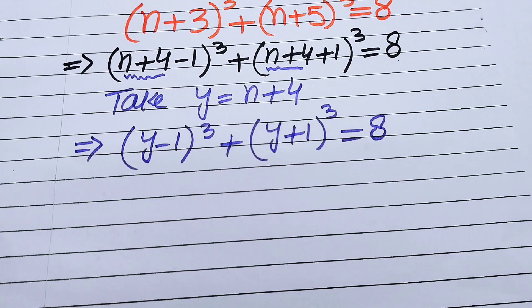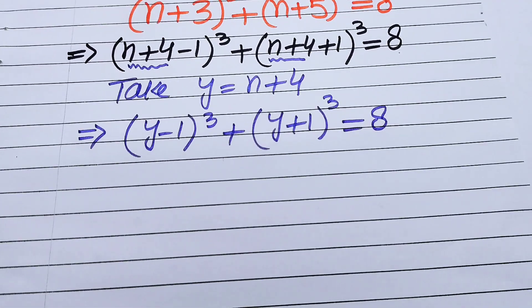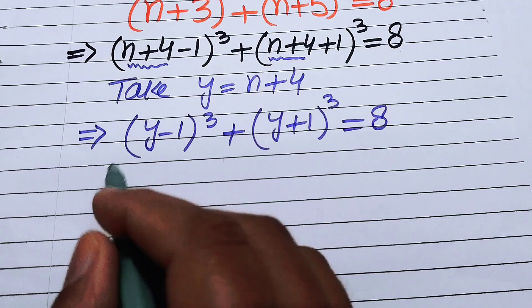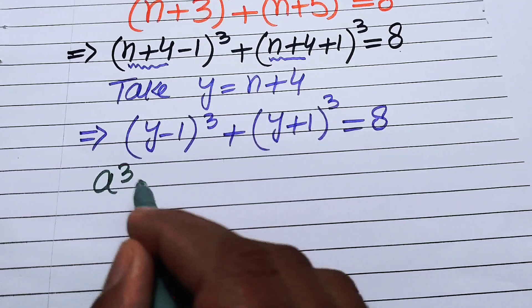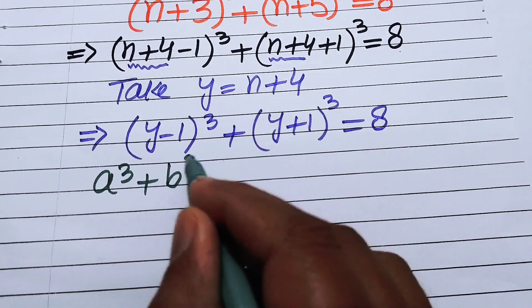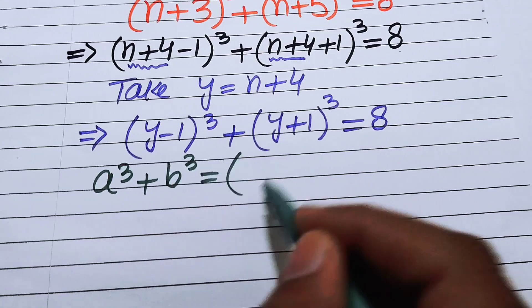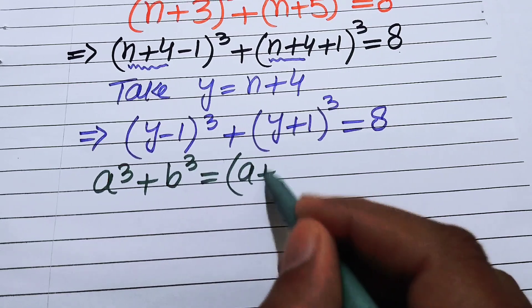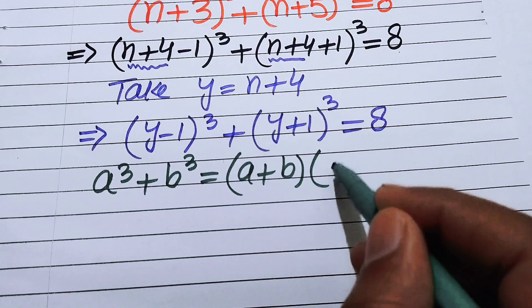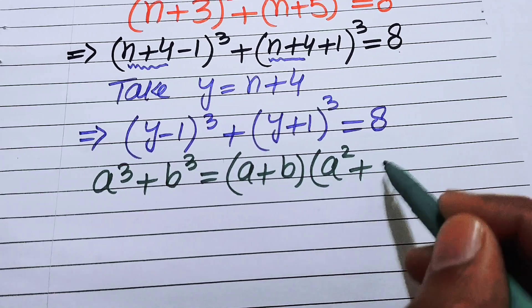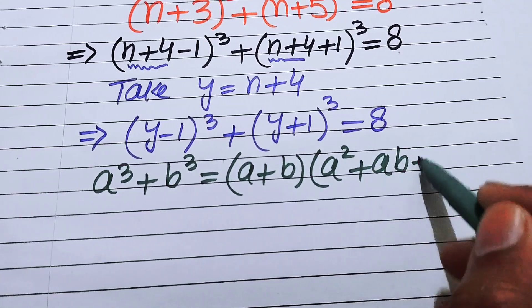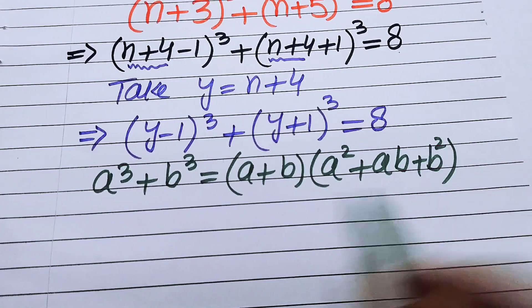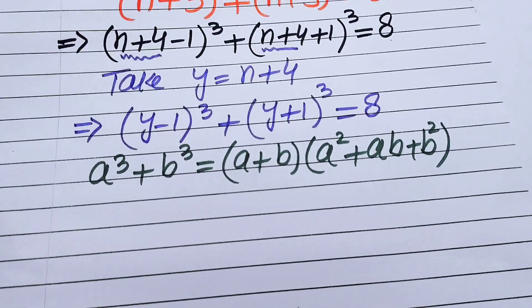This equation can be simplified using the cubic sum formula. We will apply: a³ + b³ = (a+b)(a² + ab + b²) in order to solve this problem.